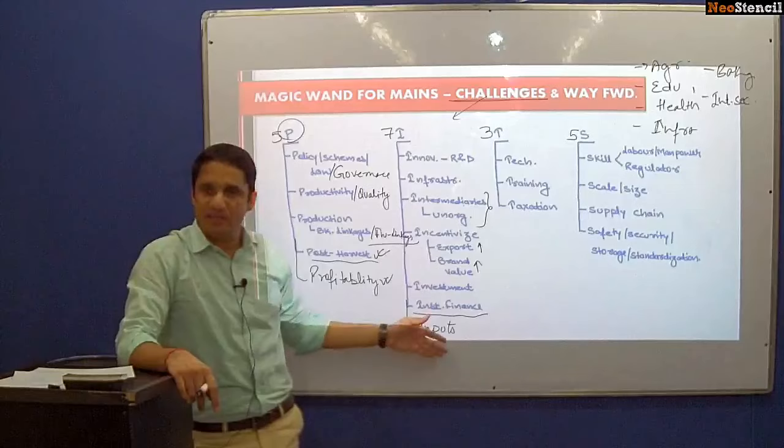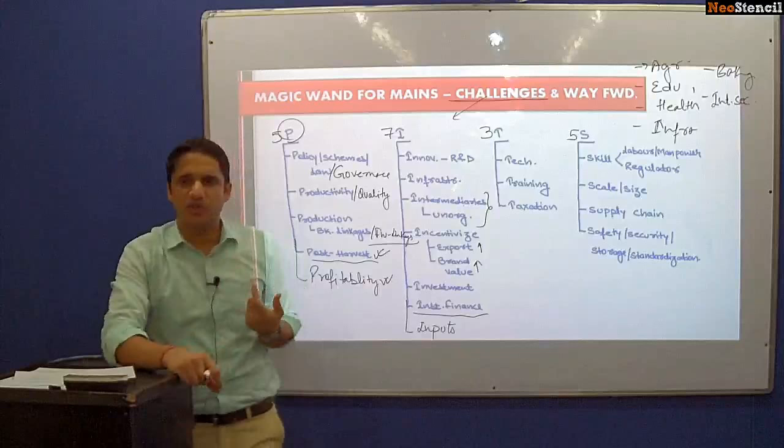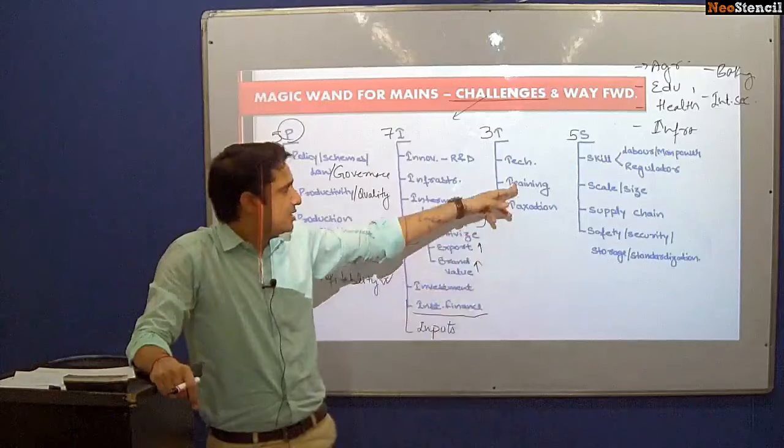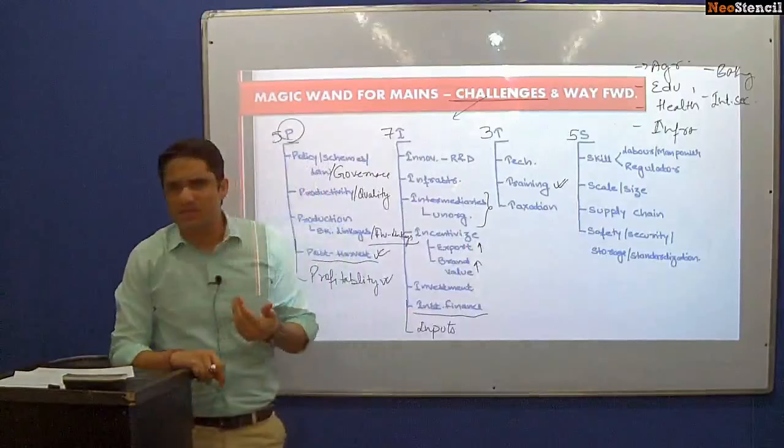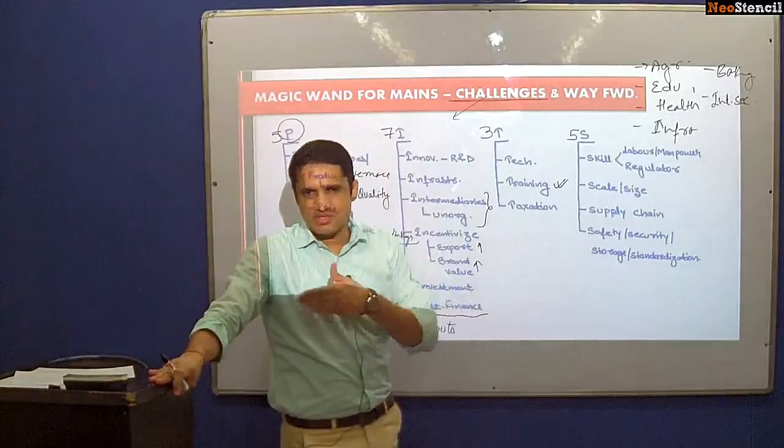Next we have the 3 T's. The first T is technology — farmers involved in subsistence farming hesitate to adopt new technologies. The second T is training — illiterate farmers exist, and although agricultural universities and ICAR's extension services are trying, training is not very successful.